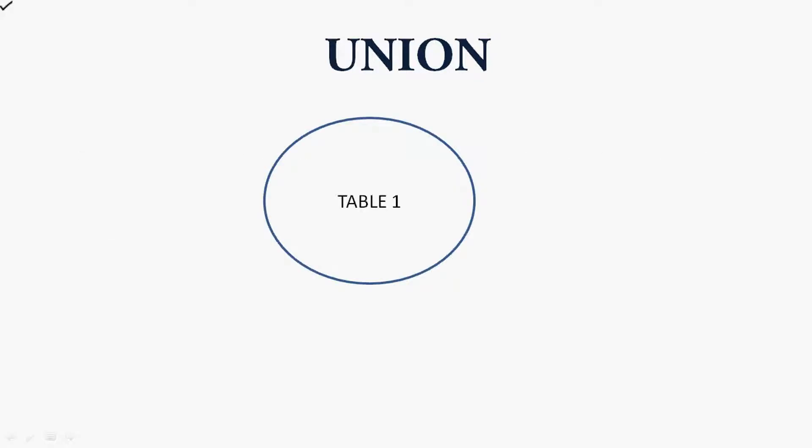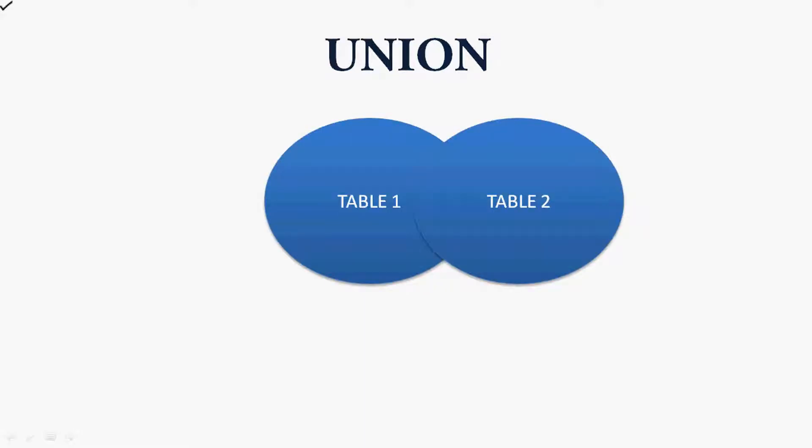Now we will see the pictorial representation of union. Consider this is table 1, and here we can see table 2, and here it shows the result of union using two tables.